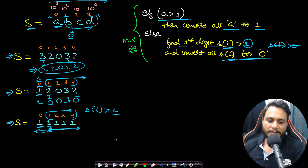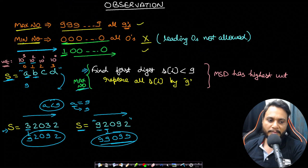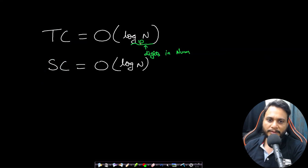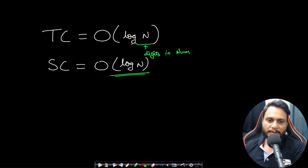The time complexity for both finding max and min numbers is O(log n base 10), since we iterate over the number of digits. The space complexity is also O(log n base 10) because we store a copy of the input as a string.